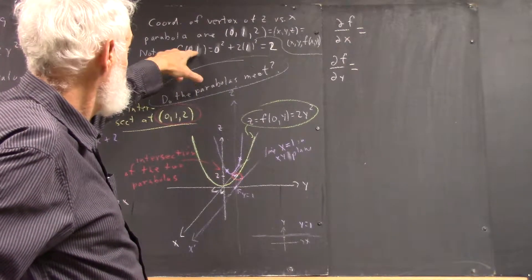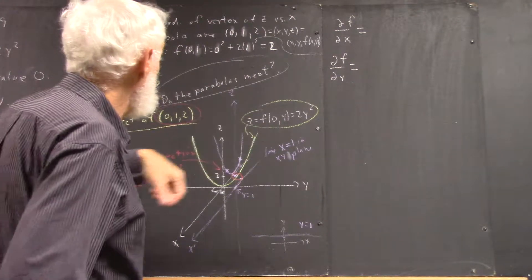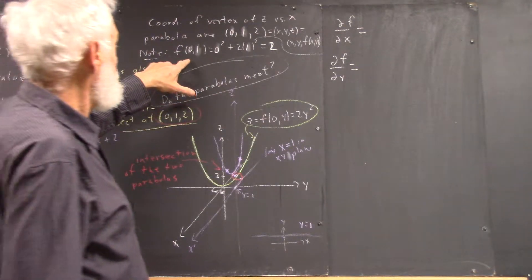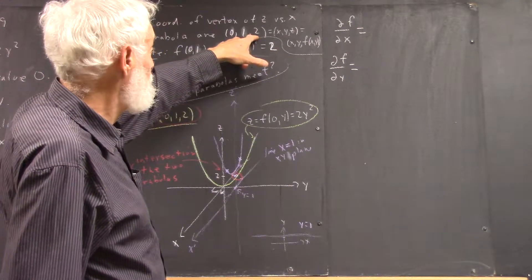or X equal to 0, letting Y equal to 1, that's how we got our first graph, our green graph. So the 2 that we get here is just our Z-coordinate here.